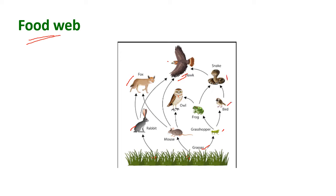Another food chain: grass is eaten by grasshopper, grasshoppers are eaten by frog, and frogs are eaten by snakes and also by owl. Several food chains are present in this picture and these food chains are interrelated.